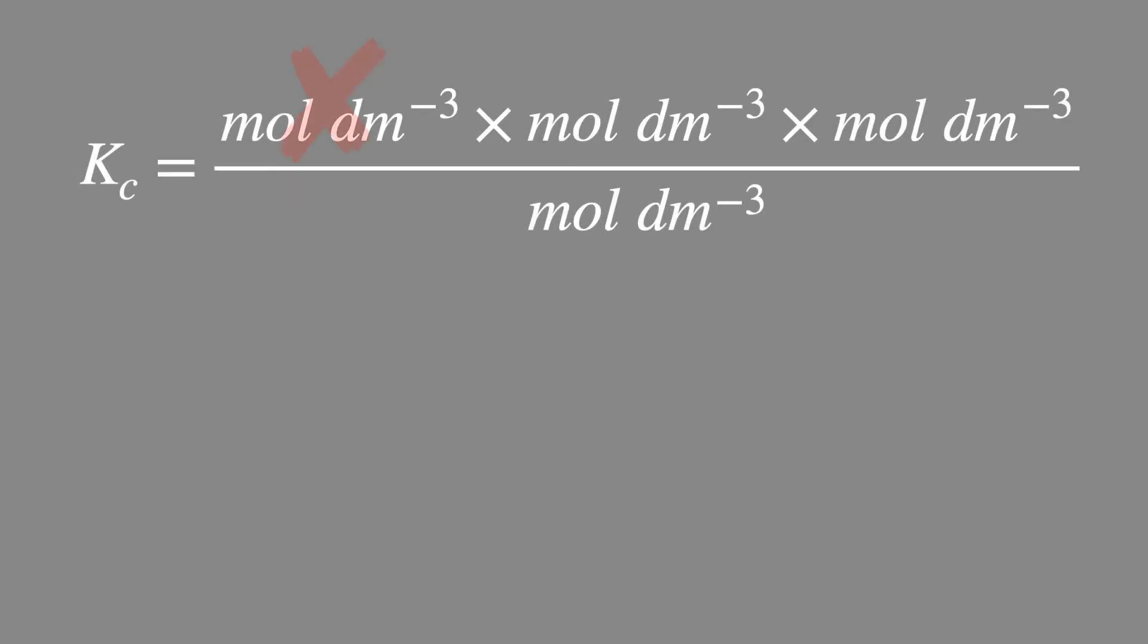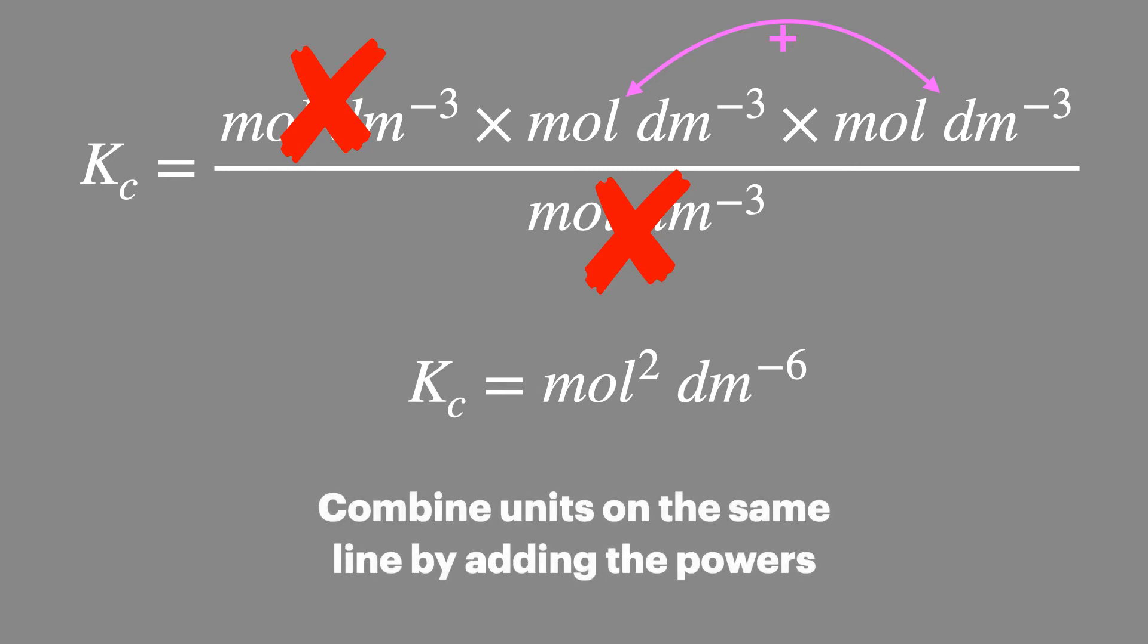In this final example then after cancelling the units we're left with two sets of units on the top row. We can combine these by adding their powers to give moles to the power of two and decimetres to the power of minus six.